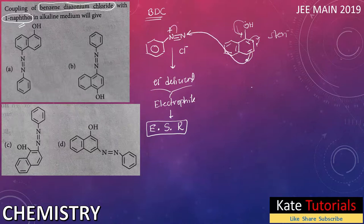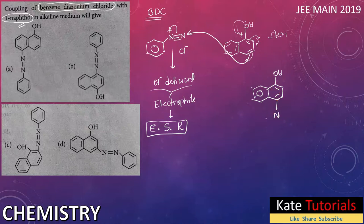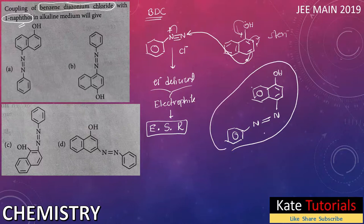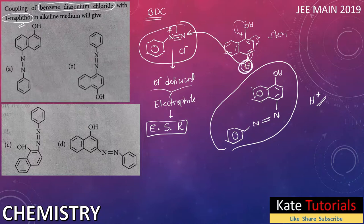The electron density attacks here, and this nitrogen becomes neutral. The product I get has the naphthol ring as it is, with OH, and the hydrogen that was initially there at the fourth position is substituted by this N=N group attached to the benzene ring. There will be liberation of H⁺. This electrophile substituted the hydrogen — that is electrophilic substitution reaction (ESR).